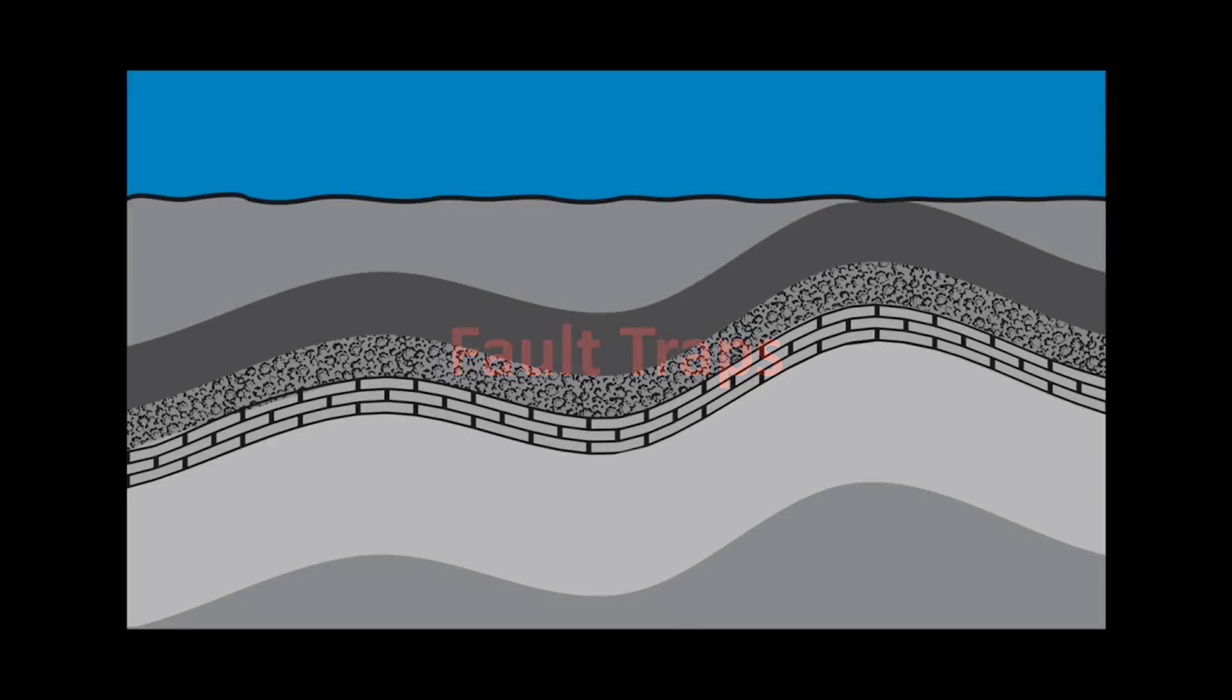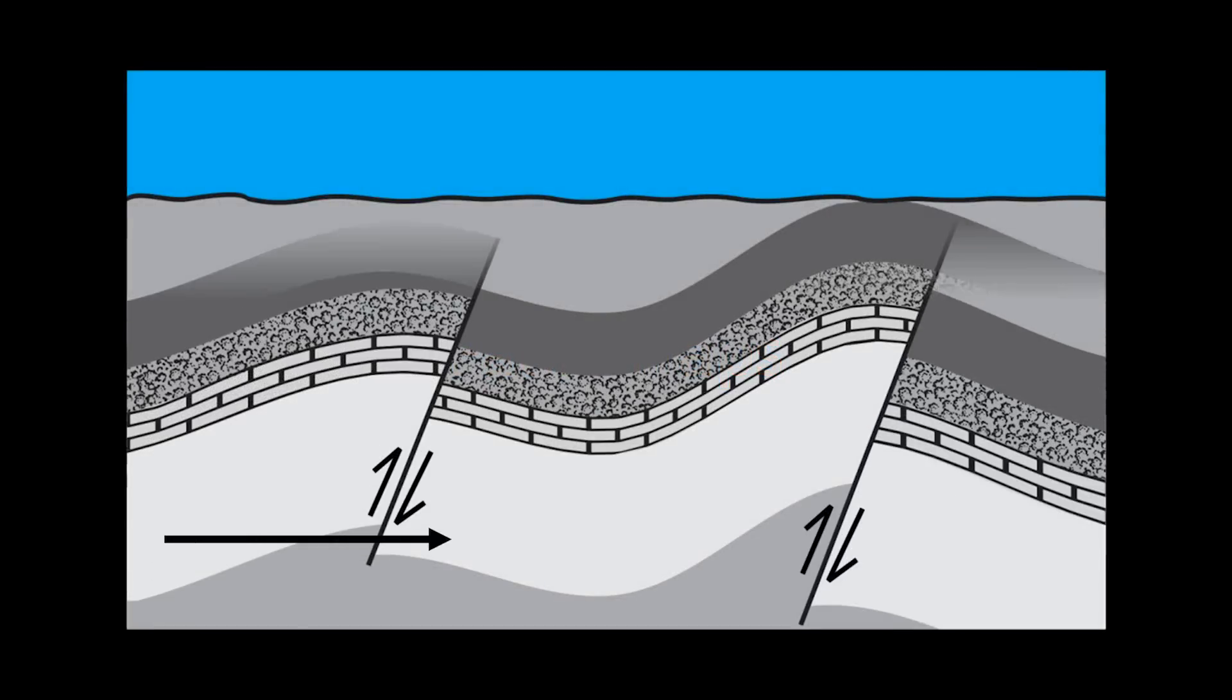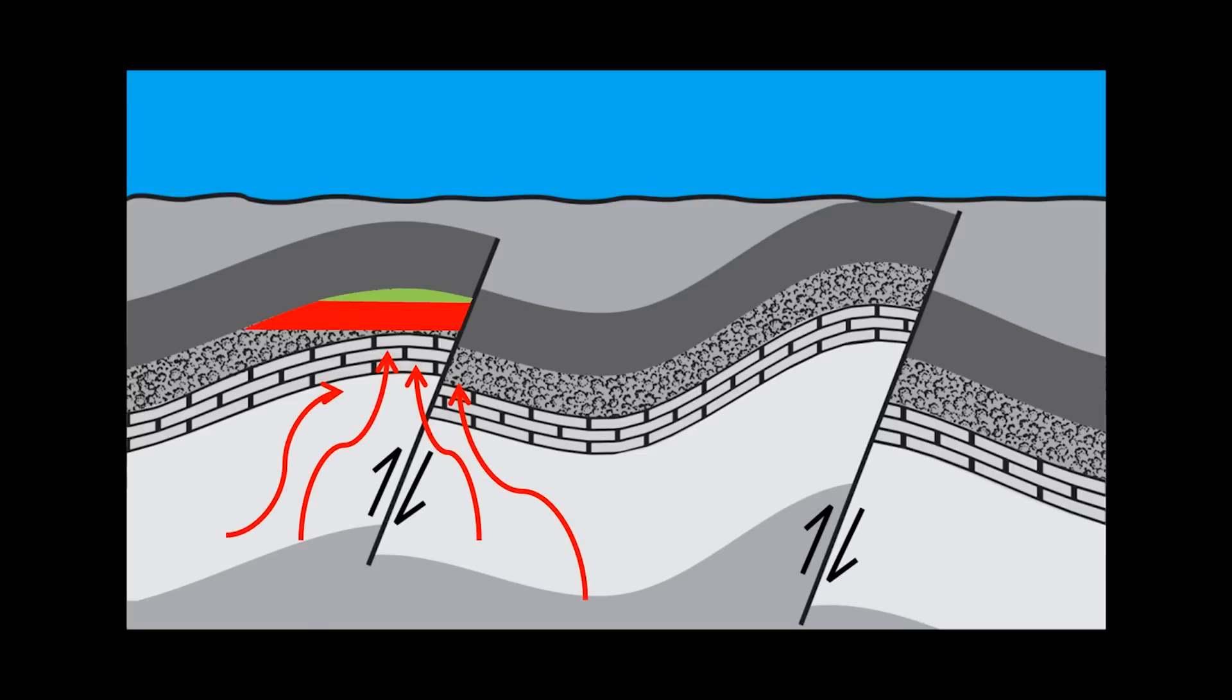Finally, we are going to look at various fault traps. Typically in an area that has already undergone compression, normal faults will cut through reservoir, cap, and source rock alike. Some faults will seal if a reservoir is faulted to a cap rock, and some faults will seal if the fault itself is sealed.